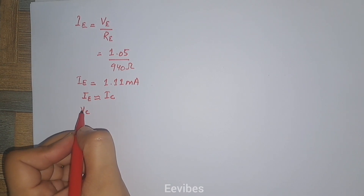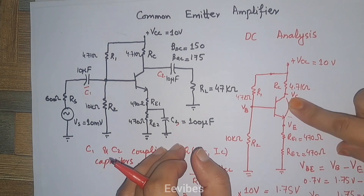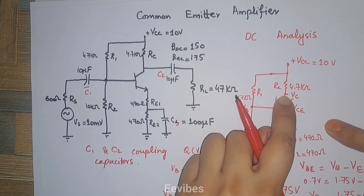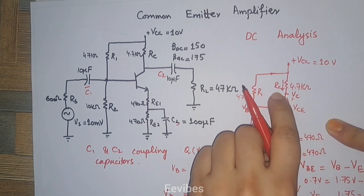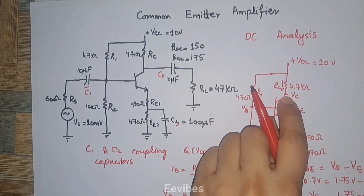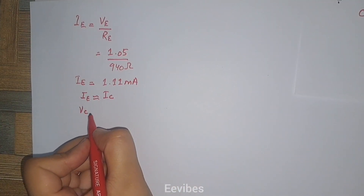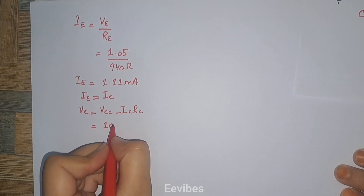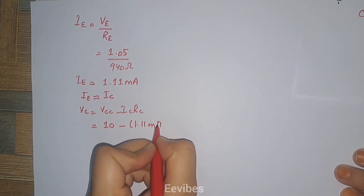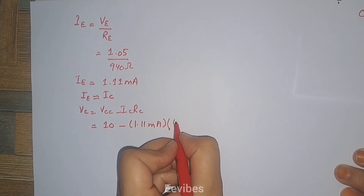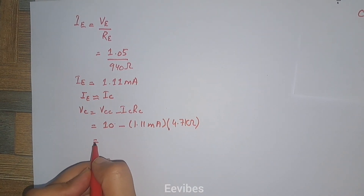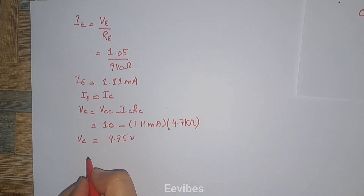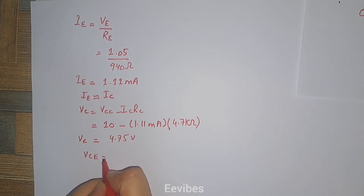Since emitter current is approximately equal to collector current, IC ≈ 1.11 mA. Looking at the collector voltage: the source VCC has a voltage drop across the collector resistor RC due to the collector current flowing through it, and the remaining voltage appears at the collector terminal, giving VC equal to 4.75 volts.